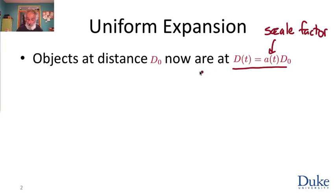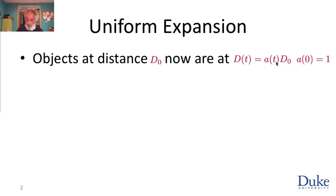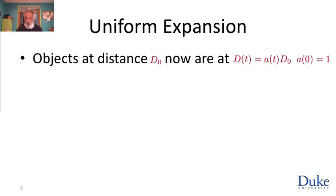Because we call the present t=0, then a(0)=1, so that d at t=0 is exactly d₀. If the universe is expanding, then for t>0, a>1; for t<0, a<1, and a is growing. If a is shrinking, we can describe a contracting universe just as well. We can describe any behavior of the universe by a suitable choice of the function a(t).